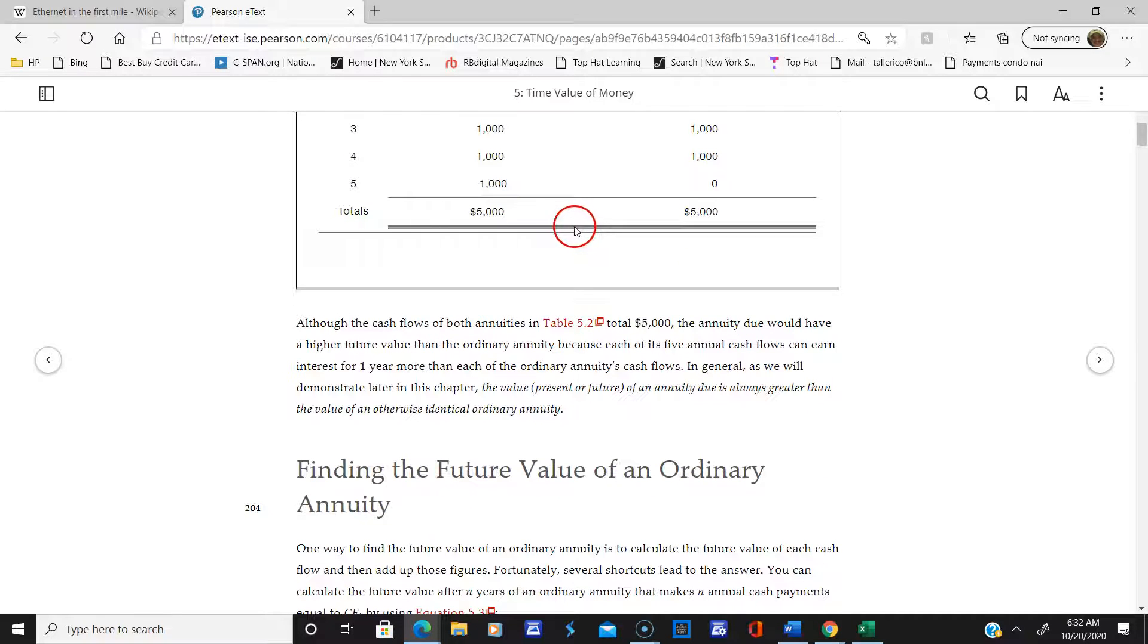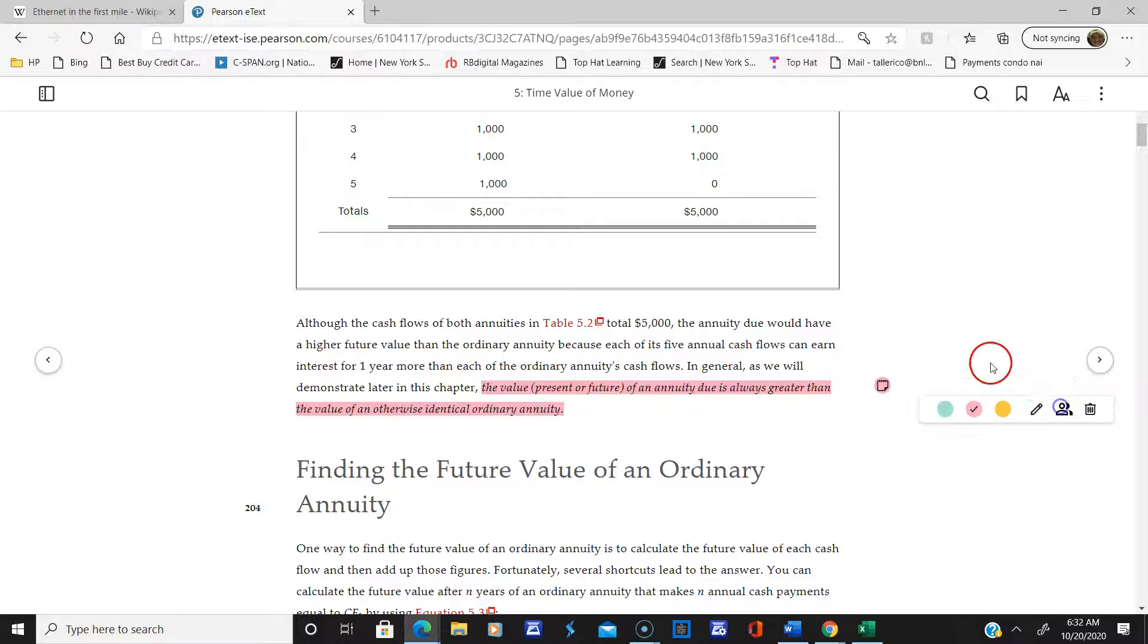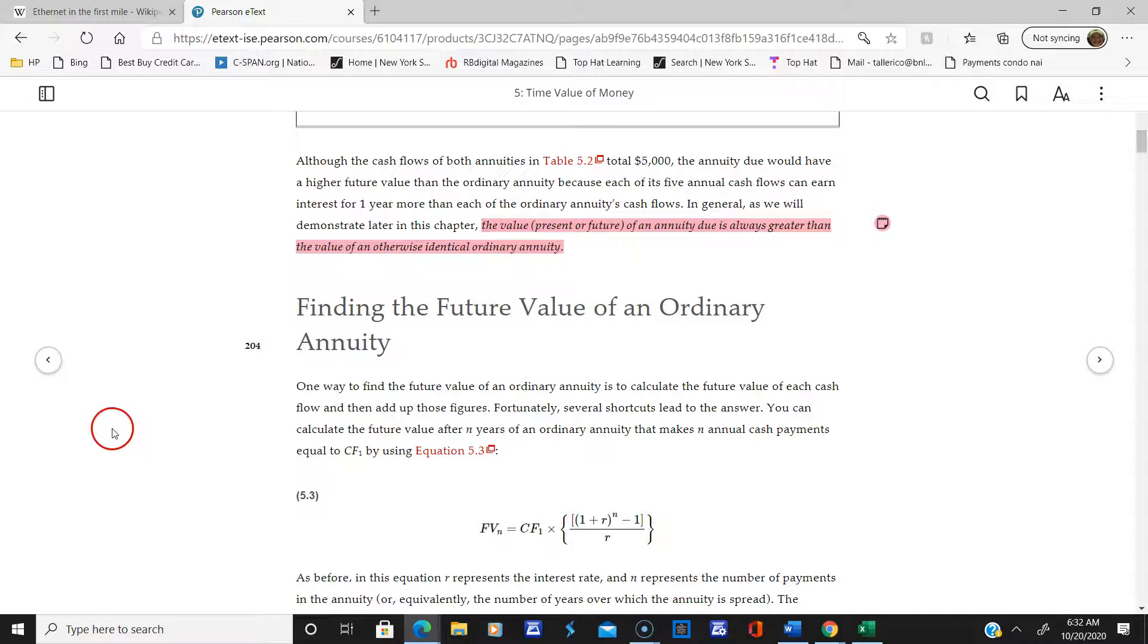One thing we're going to learn in this chapter: the value of an annuity due is always greater than the value of an ordinary annuity because you're putting the money in earlier. I hope everybody's clear about that. I'm going to stop here and pick up at finding the future value of an ordinary annuity when we start doing the calculations. Everyone be safe and take care of yourselves.